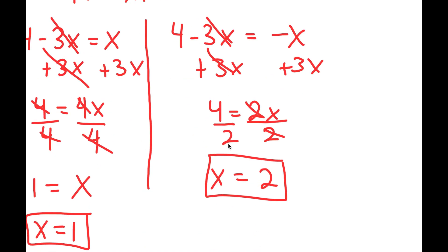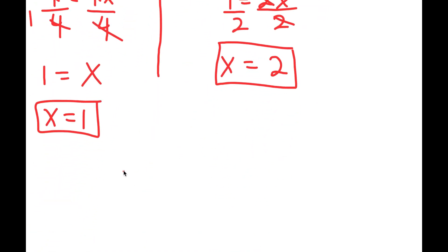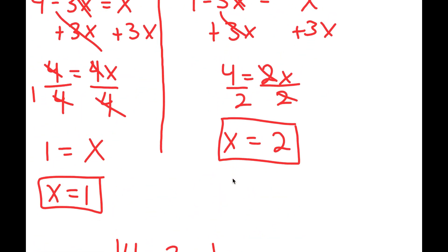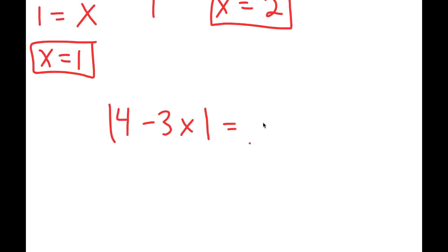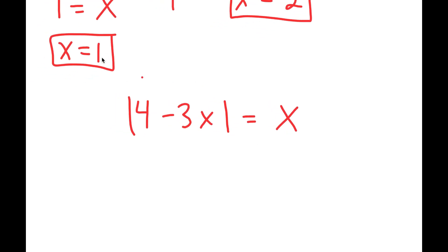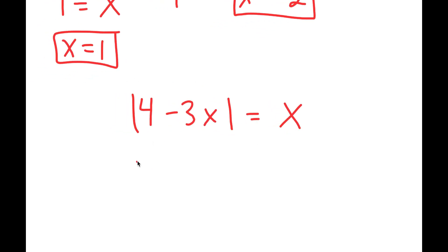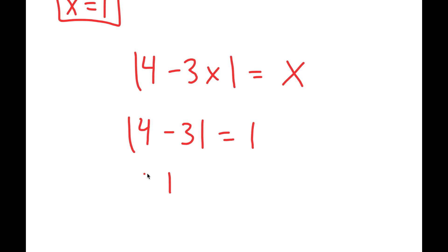Now, an important step for solving the absolute value equation is checking to see if our solutions are right. If the absolute value of 4 minus 3x equals x, let's try x equals 1 first. If x equals 1, I get 4 minus 3 equals 1. 4 minus 3 is 1, the absolute value of 1 is 1, so I get 1 equals 1.